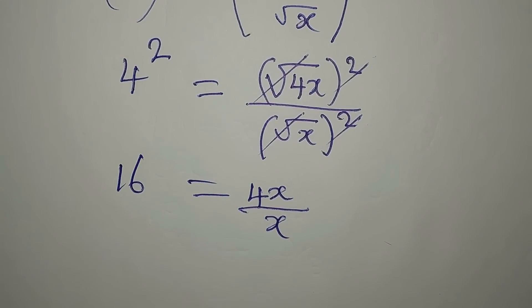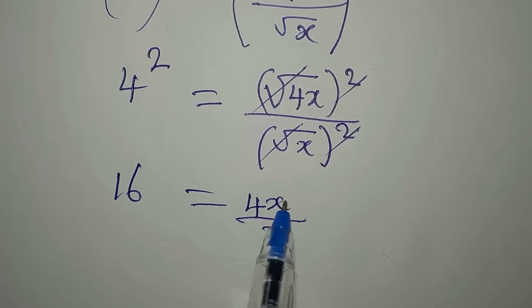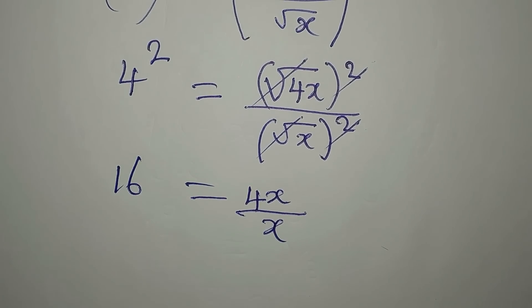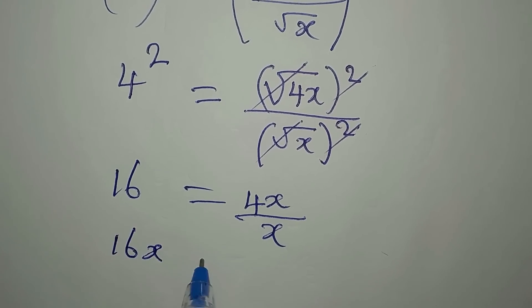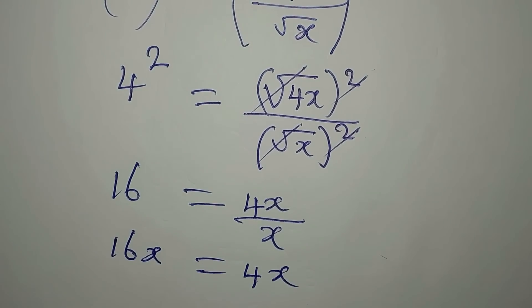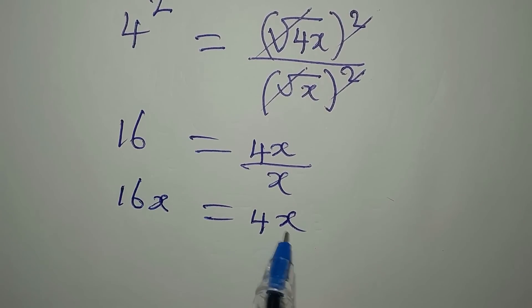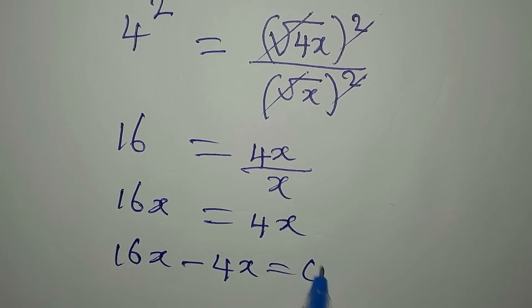Now, if you want to get the value of x, do not cancel out x. Because if you cancel out x, then you're not looking for anything. So what do we do? Let's cross multiply at this point. So we have 16x equals 4x.